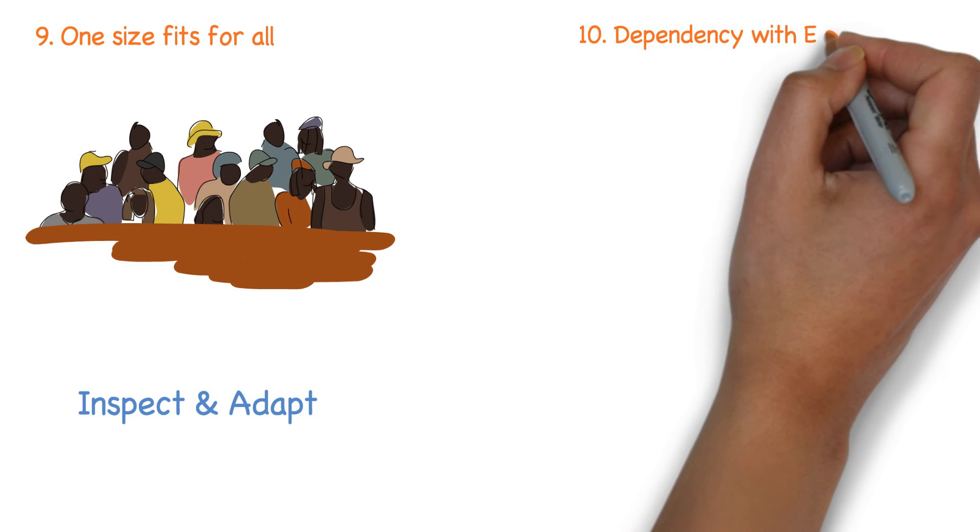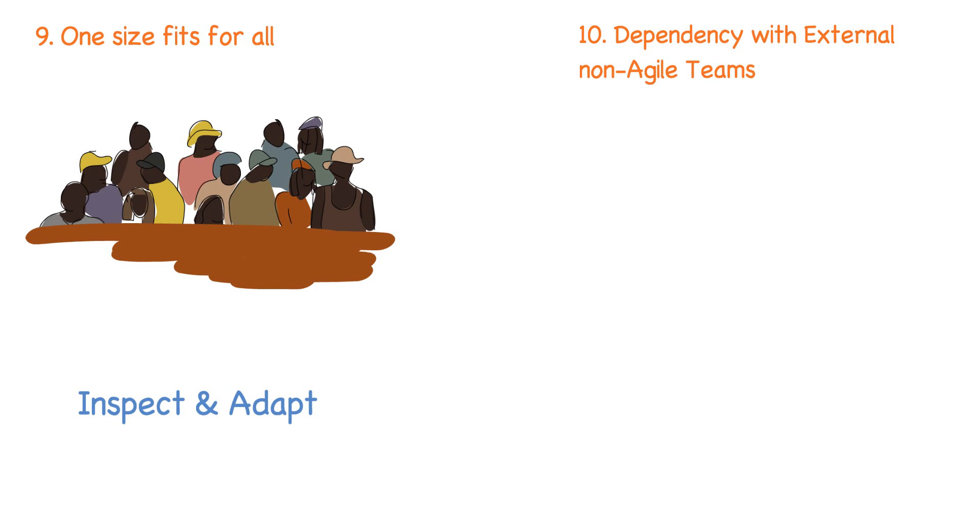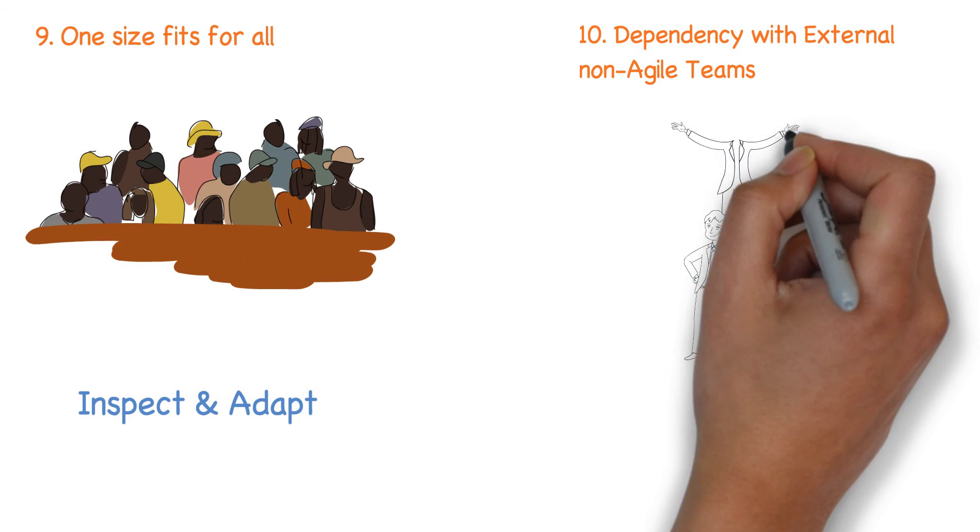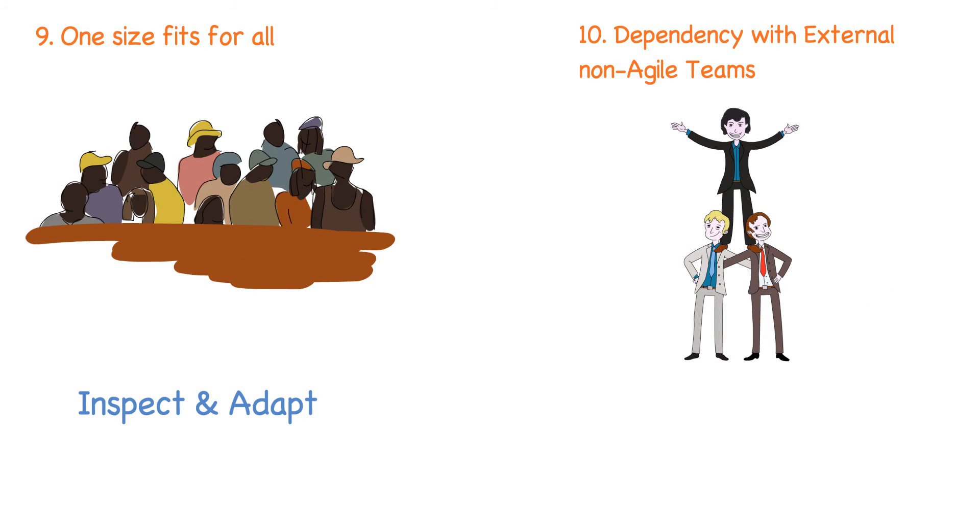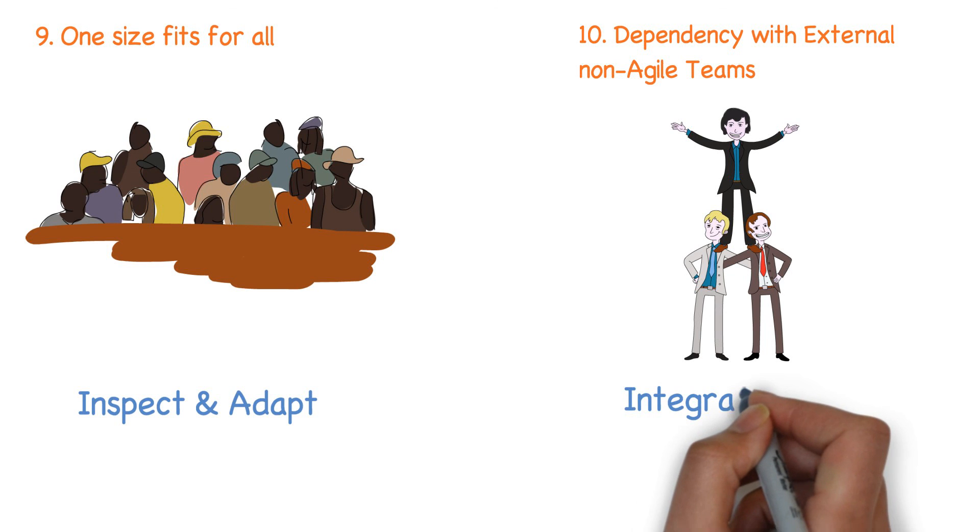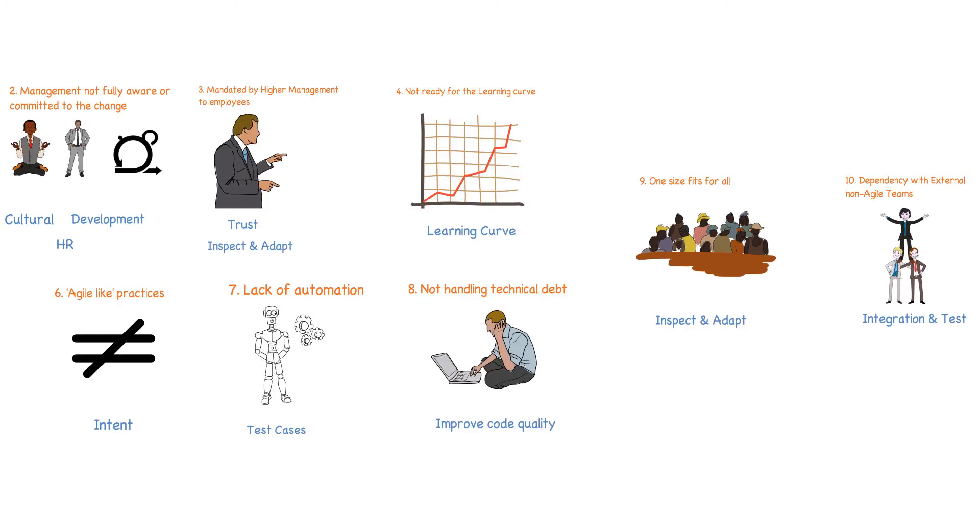Dependency with external non-Agile teams can be another cause for failures. If you have large dependencies with external teams who do not follow Agile, it will be an uphill task to expect intermediate good quality delivery from them for integration and test. This may eventually defeat the purpose of your sprint releases as you may not be able to validate in the product context.